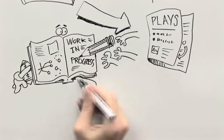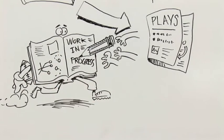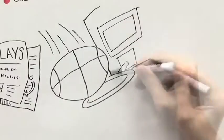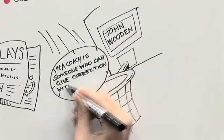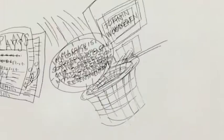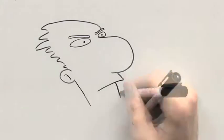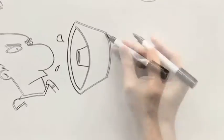What they seemed to value even more than the playbook was how it was put into action. As legendary basketball coach John Wooden once said, a coach is someone who can give correction without causing resentment.